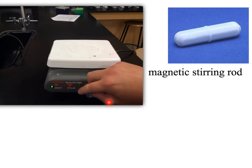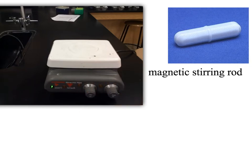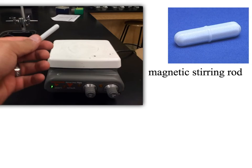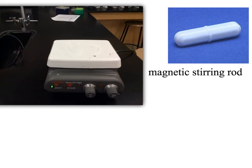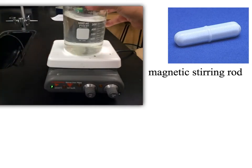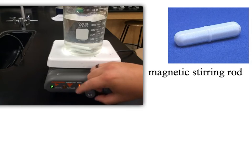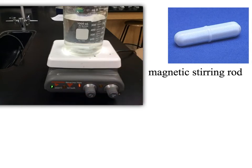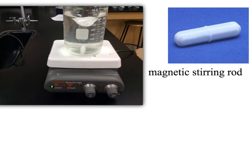Now we'll talk about two pieces of equipment: a hot plate and a magnetic stirring rod. The hot plate has two knobs — a heat knob and a stirring knob. The magnetic stirring rod's function is to stir items on a hot plate. You place the beaker on the hot plate, put the magnetic stirring rod into the liquid, and you can not only heat it but also stir it — slowly or rapidly. So the hot plate has two functions: to heat an item and to stir it.